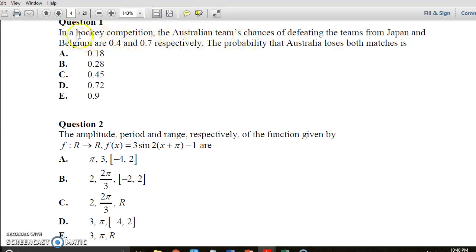In a hockey competition, the Australian team's chances of defeating teams from Japan and Belgium are 0.4 and 0.7. Probability Australia loses both matches. Now they're saying they're probably defeating, that means Australia beating Japan and Belgium are 0.4 and 0.7. Probability Australia loses both matches so that means they've lost to Japan 0.6 and they've lost to Belgium which is 0.3.